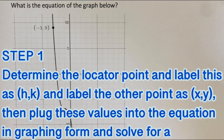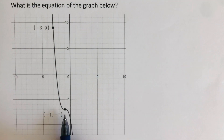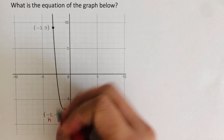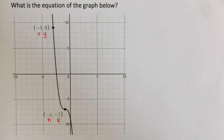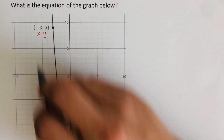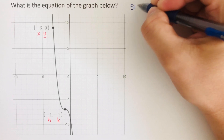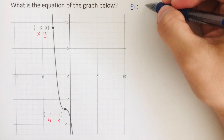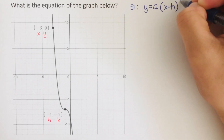Okay, so we go over the problem here. Step 1 is to determine the locator point and label this as HK and label the other point as XY. Then we plug these values into the equation in graphing form and solve for A. In this problem, this is our vertex or the locator point, so it can be labeled as HK. And then this one right here is a point on the graph, which will be our XY. The graphing form for a cubic function is Y equals A times parentheses X minus H cubed plus K.